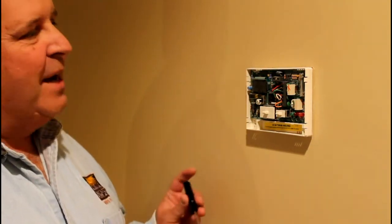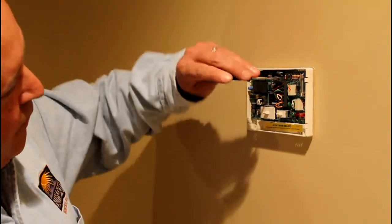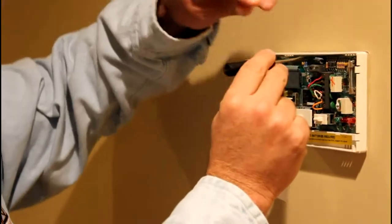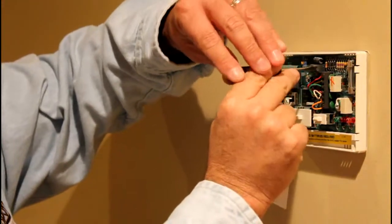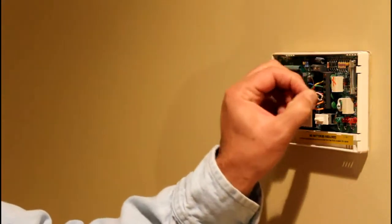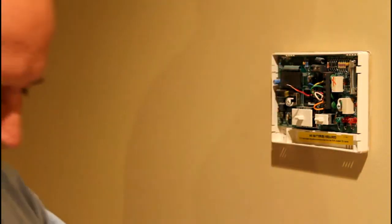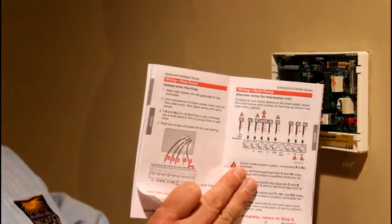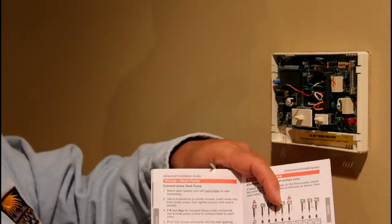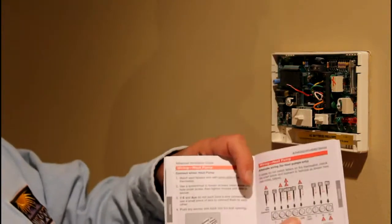I'm just going to go ahead and remove this red wire right here. Got my small screwdriver that fits in there and loosen that screw up that's holding it down. Pull that wire out. And then label it. They have a little map inside of the thermostat guide that gives me how to label each one of those wires.